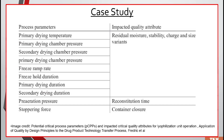Here is a case study showing examples of process parameters. For a lyophilization operation, the potential critical process parameters and which critical quality attributes they impact are given. The process parameters include drying temperature, drying pressure, chamber pressure, freezing rate, freezing duration, primary drying duration, and secondary drying duration — these are the stages of lyophilization. The quality attributes they impact include stability, size, and reconstitution time.